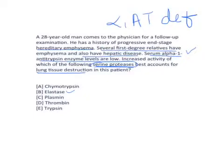Elastase is one of the serine proteases, and its function is to destroy elastic tissue — that is, elastin. Elastin is associated with collagen and is responsible for the elastic property of connective tissue. Notably, elastin is rich in lung tissue. Elastase is released from neutrophils during inflammatory reactions, and when alpha-1 antitrypsin is low, elastase goes unregulated and destroys lung tissue, leading to emphysema.